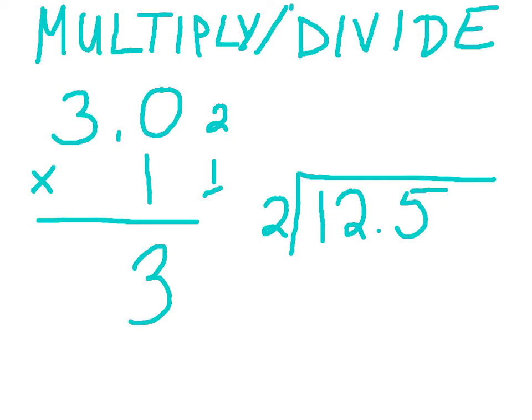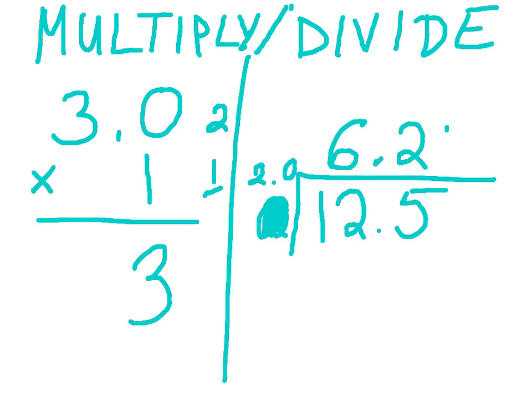In our division example, the same rule applies. We have a digit with one significant digit, but let's change that a little bit. Let's instead say that it's 2.0. We're going to divide 12.5 by 2.0. So, now the answer will be 6.25. And the least of these, between 2.0 and 12.5, is two significant digits. So, our answer will be rounded to two significant digits.